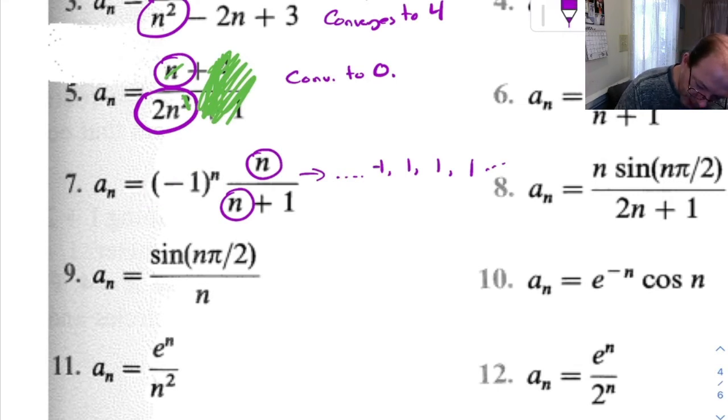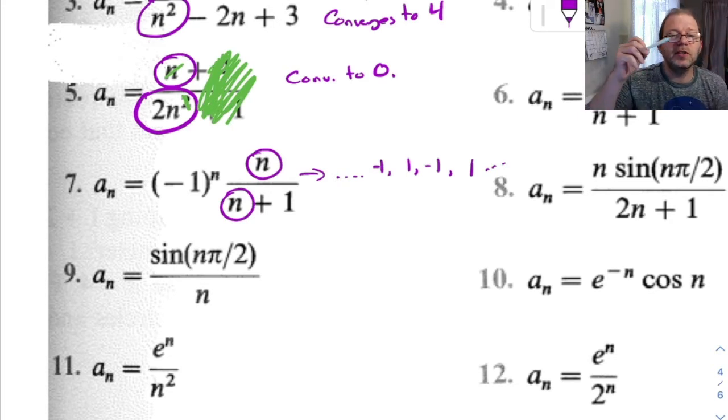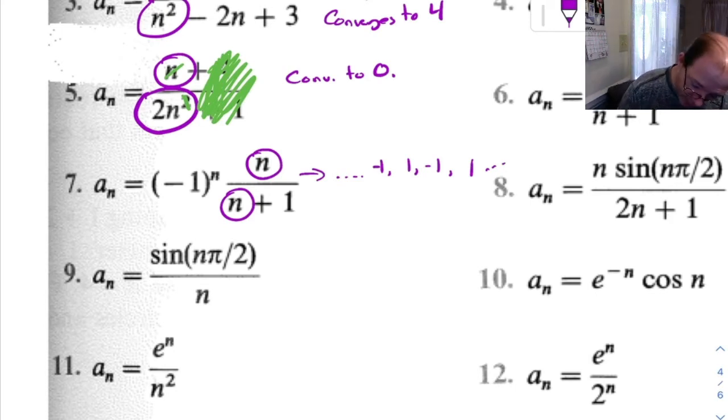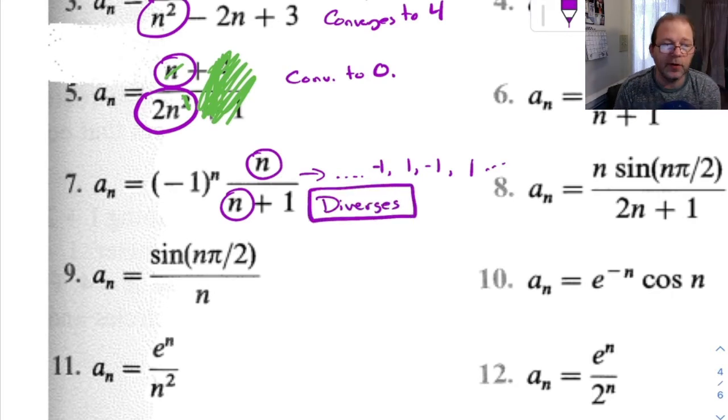But this right here is going to make them alternate. So eventually we get terms that are negative 1, positive 1, negative 1, positive 1, and so on. So this is basically jumping back and forth between negative 1 and positive 1. It's never approaching any one particular number. So therefore, this diverges.